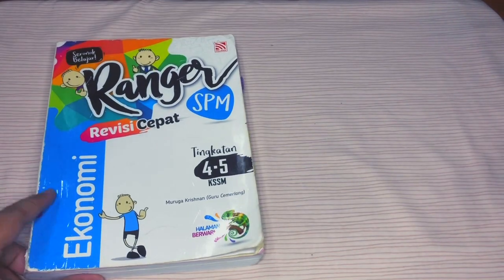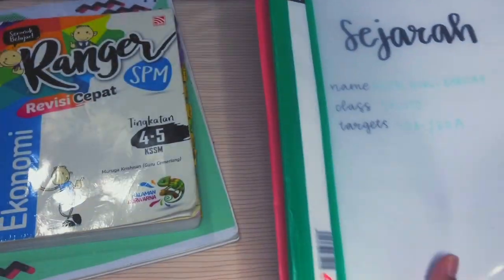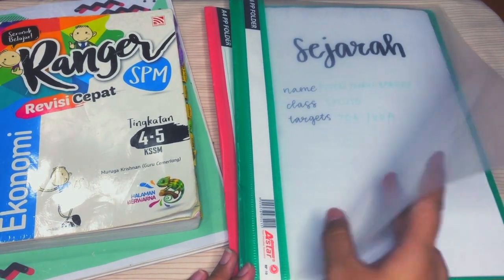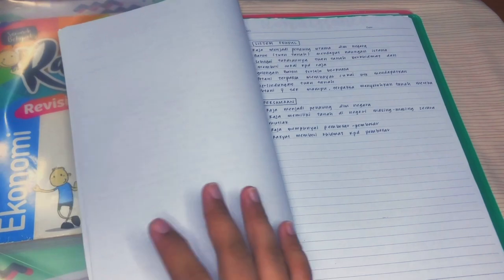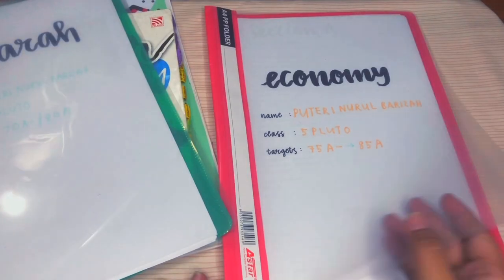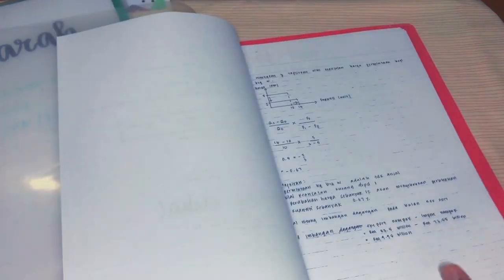And here comes the subject that most of you guys requested too. Here I got my reference book that I usually use, which is Ranger for Economy. And for Sejarah, I have a lot of references. For example, this one is the notes from EVA. I believe three notes, which is Sejarah, Economy, and Accounts.